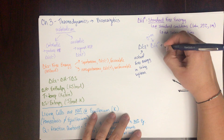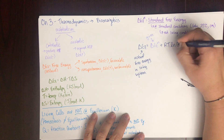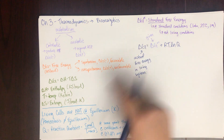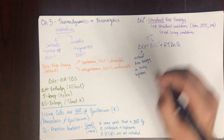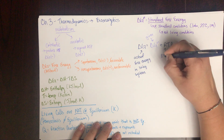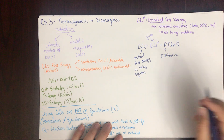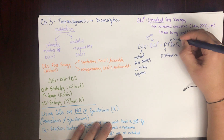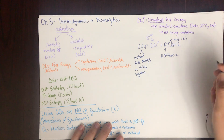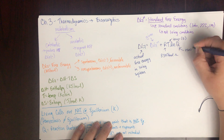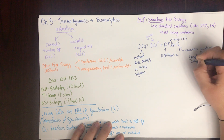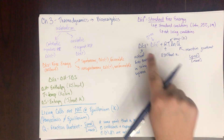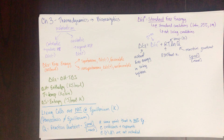The formula is: delta G equals delta G naught prime plus RT times the natural log of Q. Delta G is the actual free energy in a living system. Delta G naught prime is what you look up — the free energy at standard conditions, given in the problem. R is 8.314 joules per mole kelvin. T is temperature in kelvin. Q is the reaction quotient: concentration of products over concentration of reactants.